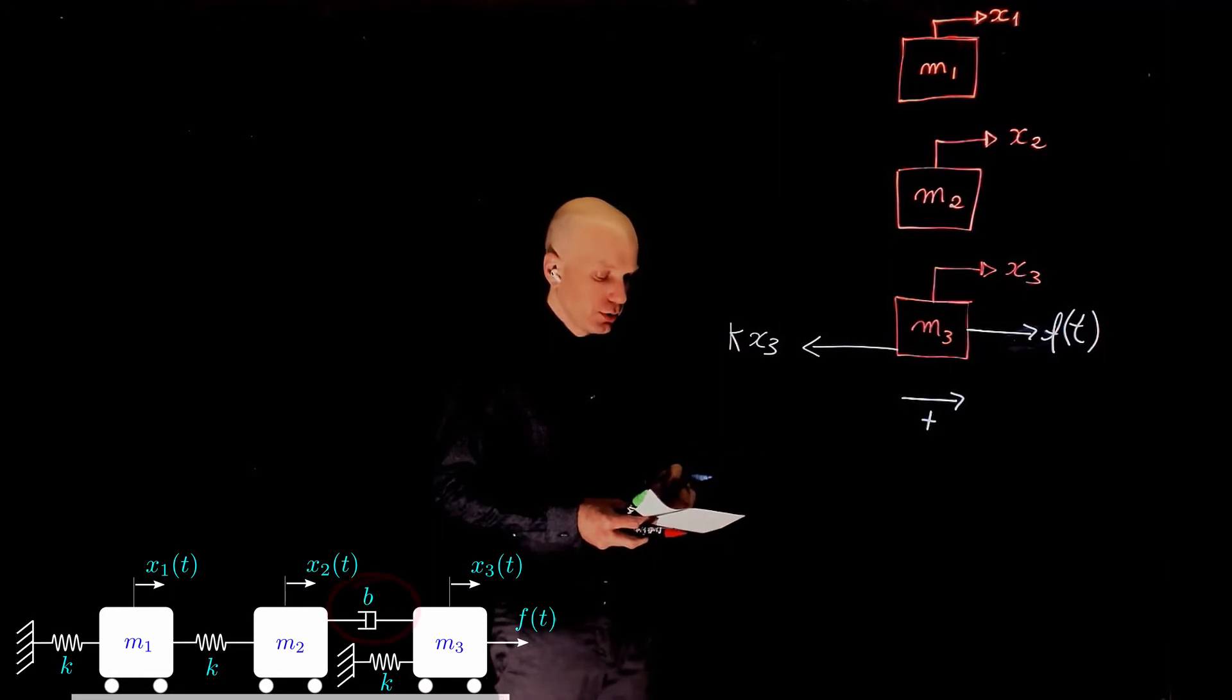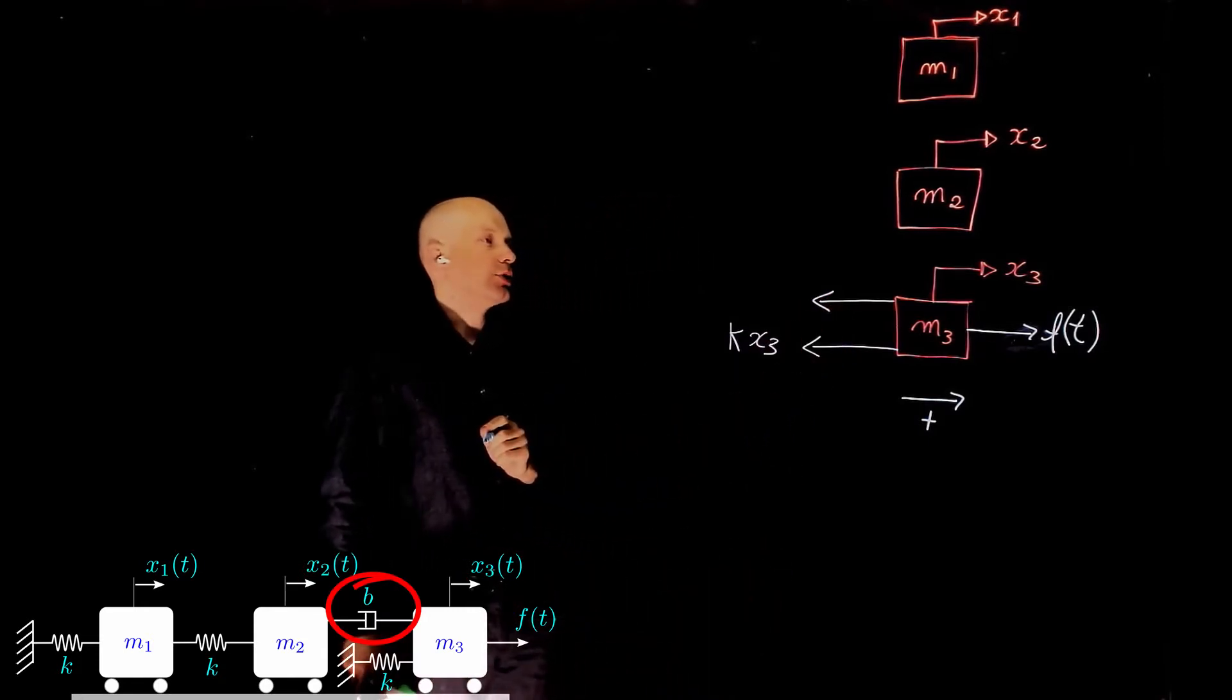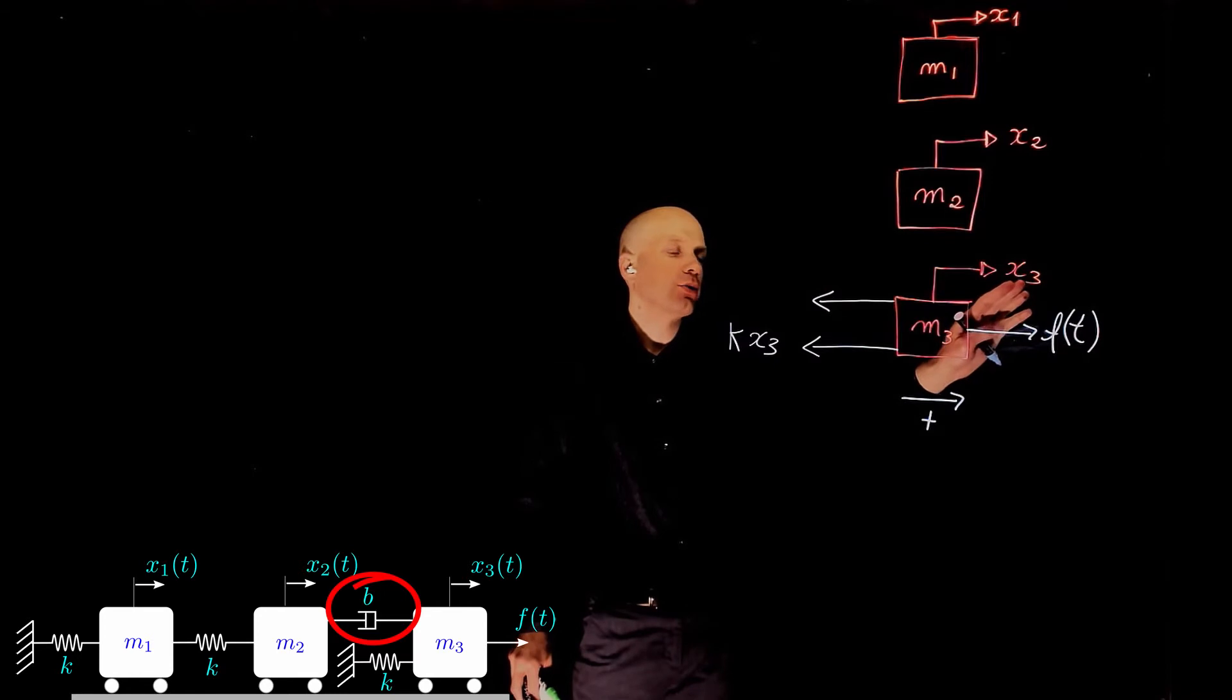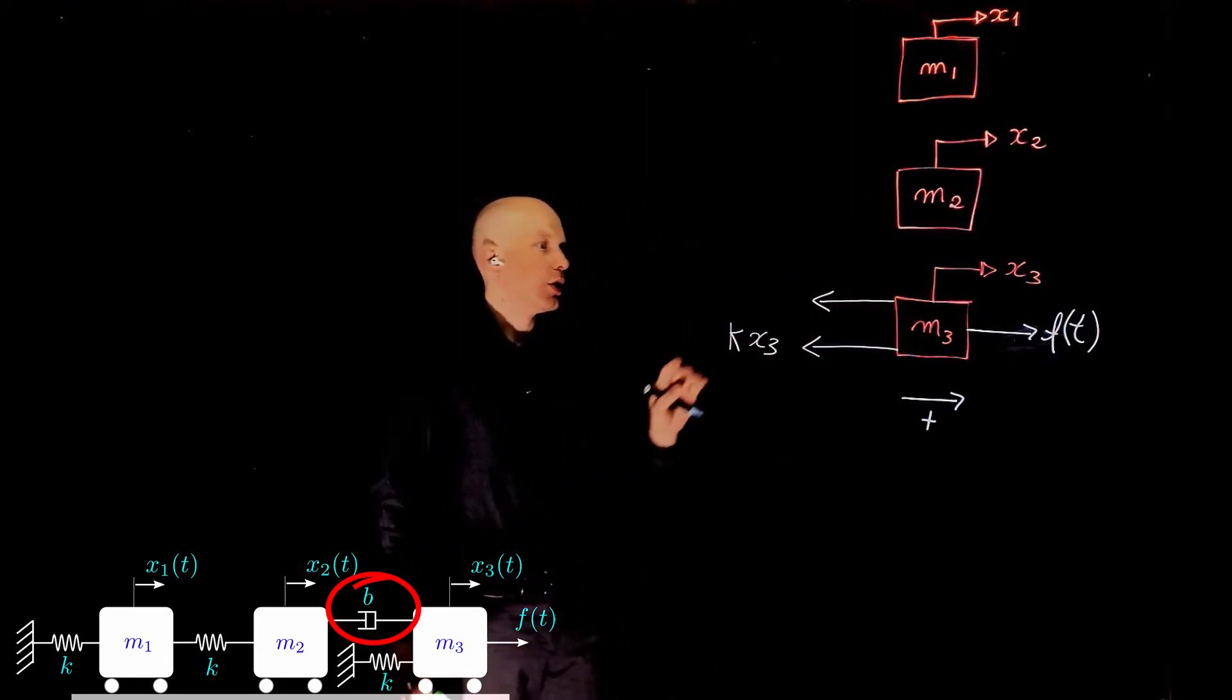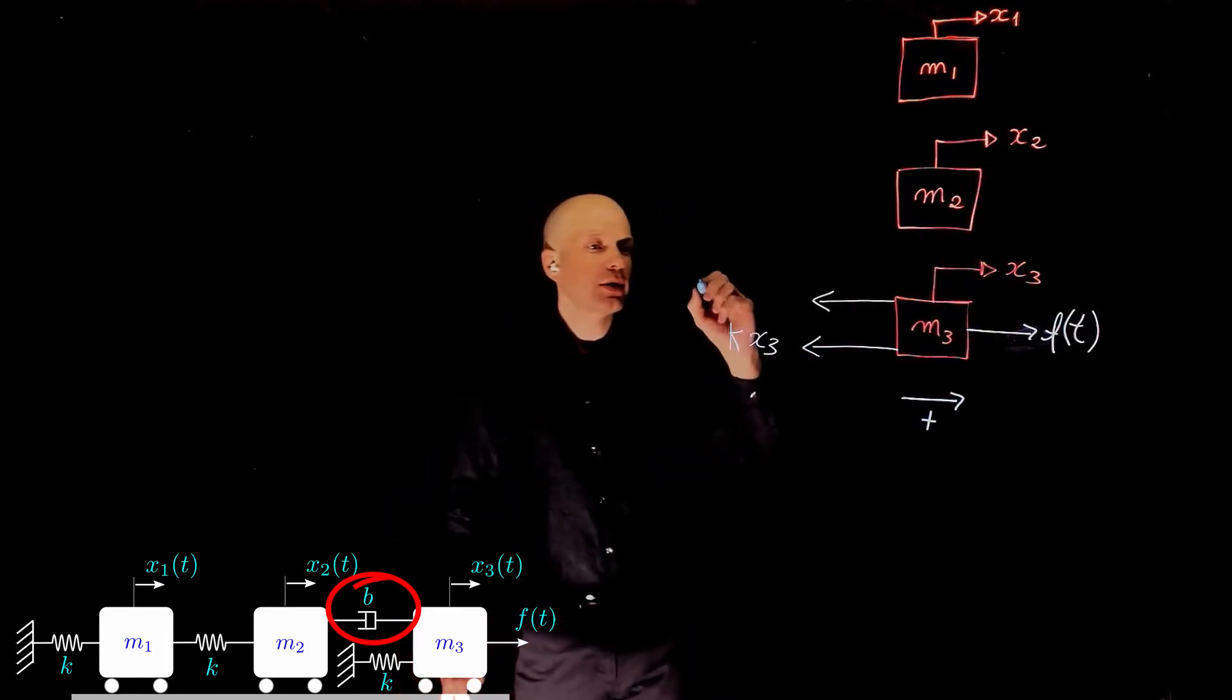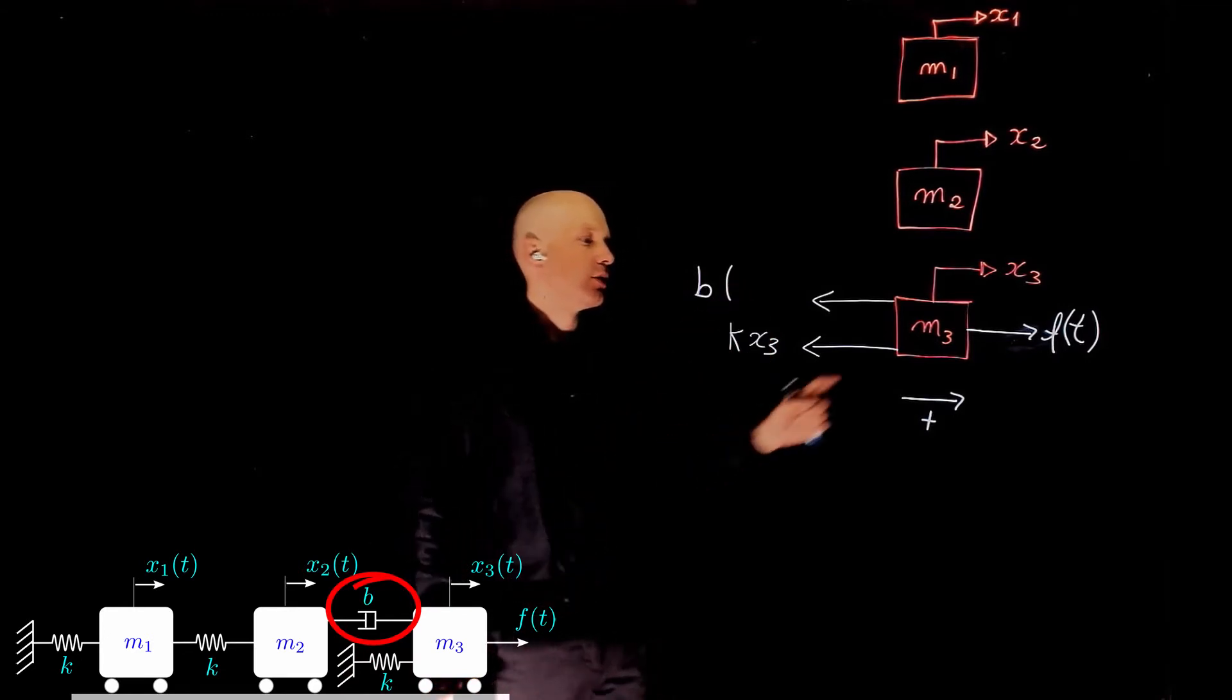There is also another force due to the damper that connects m3 and m2. As we learned, the force in the damper is proportional to the relative speed on both ends of that damper. On this end of the damper we have x3 dot, which is the speed of mass m3, and on the other side of the damper we have the speed of mass m2, which is x2 dot. Assuming that mass 3 moves more than mass 2, we can assume that the speed x3 dot will be higher than the speed x2 dot.